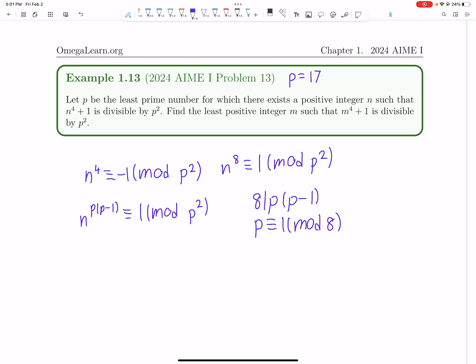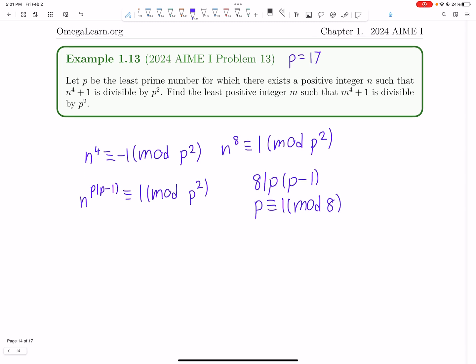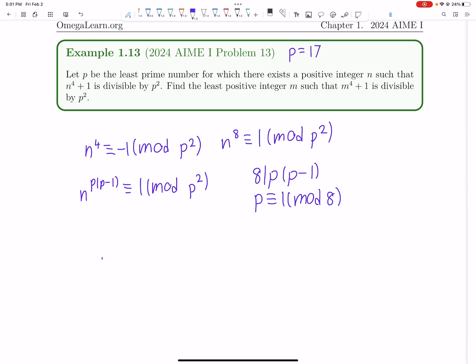Now find the least positive integer m such that m to the 4 plus 1 is divisible by 17 squared. So find the least positive integer m such that this dingy is true. So again, we see that the order of m has to be 8 mod 289.